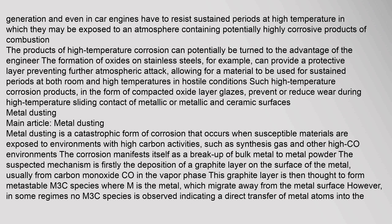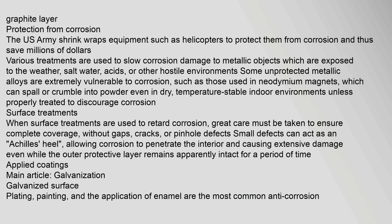Metal dusting — main article. Metal dusting is a catastrophic form of corrosion that occurs when susceptible materials are exposed to environments with high carbon activities, such as synthesis gas and other high CO environments. The corrosion manifests itself as a breakup of bulk metal to metal powder. The suspected mechanism is firstly the deposition of a graphite layer on the surface of the metal, usually from carbon monoxide (CO) in the vapor phase. This graphite layer is then thought to form metastable M3C species — where M is the metal — which migrate away from the metal surface. However, in some regimes no M3C species is observed, indicating a direct transfer of metal atoms into the graphite layer.